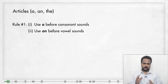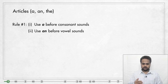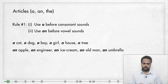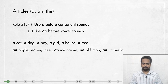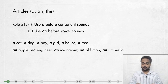So the first rule is about where to use A and where to use AN. Rule number one is: use A before a consonant sound and AN before a vowel sound. In all of these words, you see that they start with a consonant sound. Cat starts with K, dog starts with D, boy with B, girl with G, house with H, and tree with T.